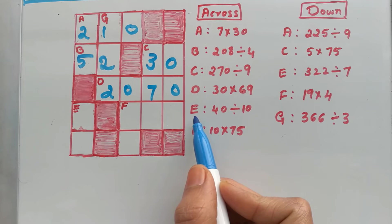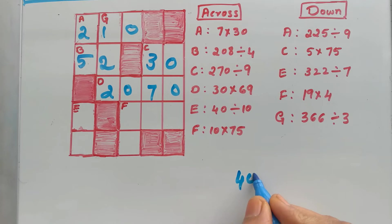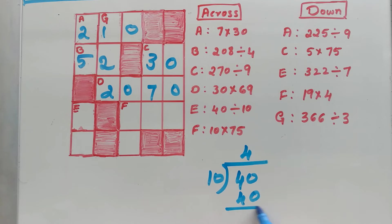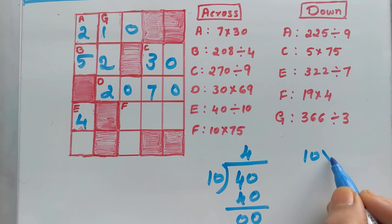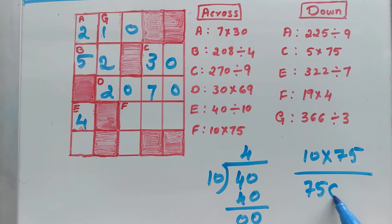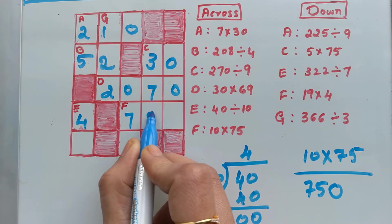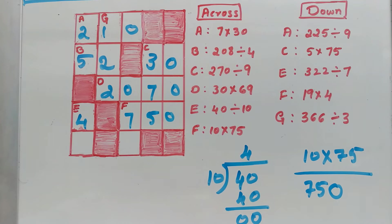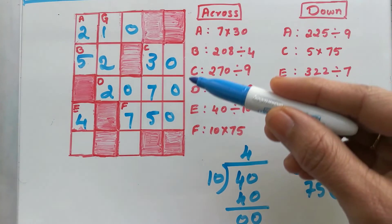D is done. Next, E: 40 divided by 10 — this is very easy. 10 times 4 is 40, so the answer is 4. Now F: 10 times 75 — 75 times 1 is 75, add a zero to get 750. So F is 750. Across is done, now it's the down section.